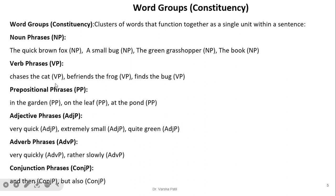Next is the verb phrase — for example 'chases the cat' or 'befriends the frog'. A verb phrase starts with a verb and is followed by a noun phrase, so VP can be formed as VP plus NP. Next is the prepositional phrase — 'in the garden', 'on the leaf', 'at the pond' — which starts with a preposition. Adjective phrases like 'very quick', 'extremely small', 'quite green'. Adverb phrases like 'very quickly', 'rather slowly'. And next is a conjunction phrase. We require to define these different types of phrases and use them to make rules for a parser.